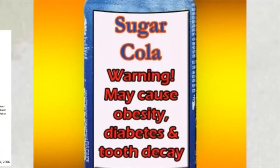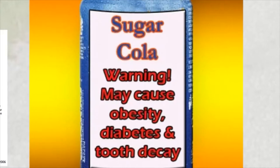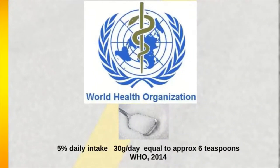When we think of tooth decay or dental caries, we think of sugar. What's interesting is sugar doesn't only cause tooth decay, but it is also a major factor for childhood obesity and type 2 diabetes. The World Health Organisation recommends that no more than 5% of our food or drink a day should be sugar — this equates to about 6 teaspoons or 30 grams a day.